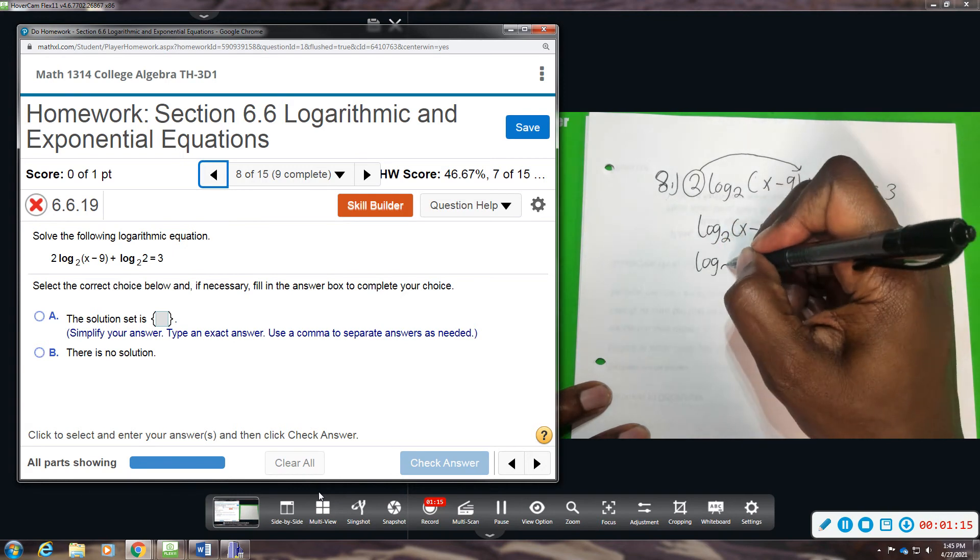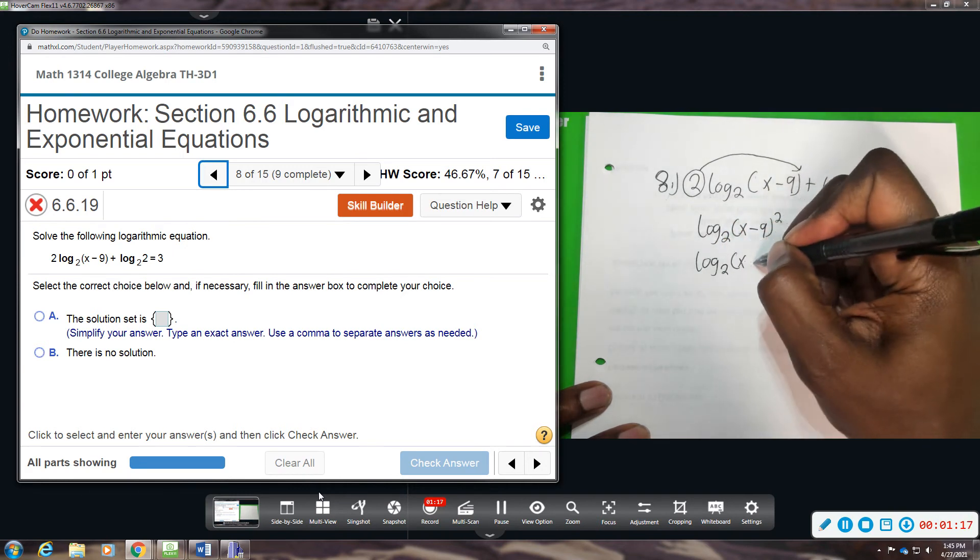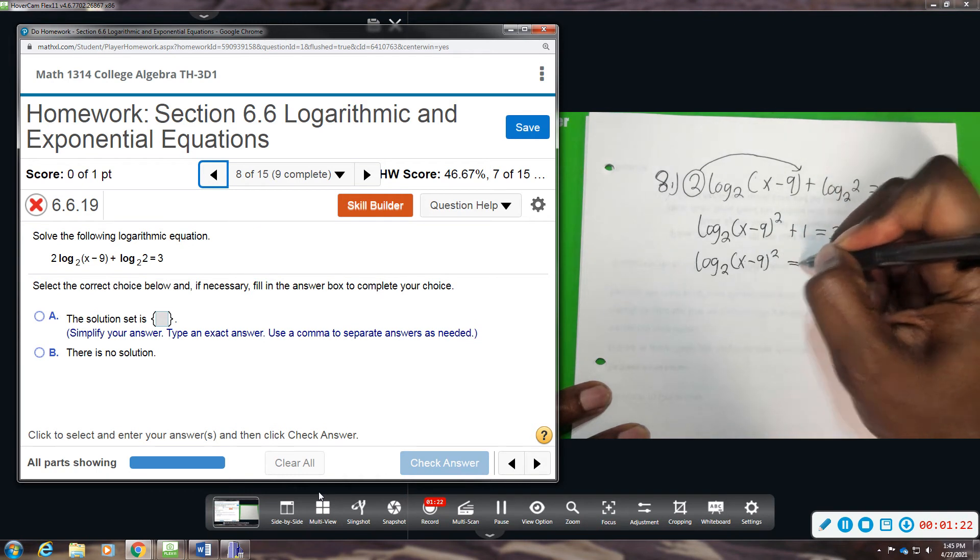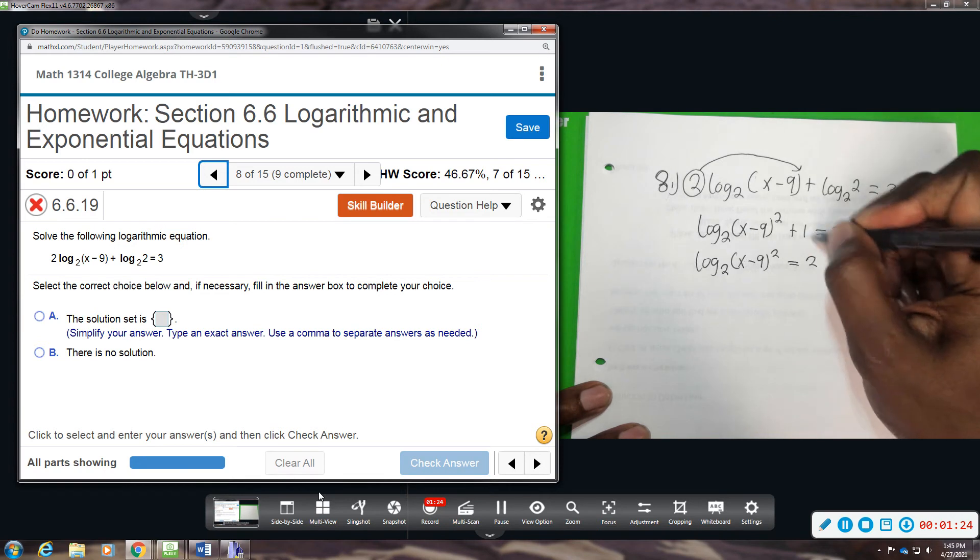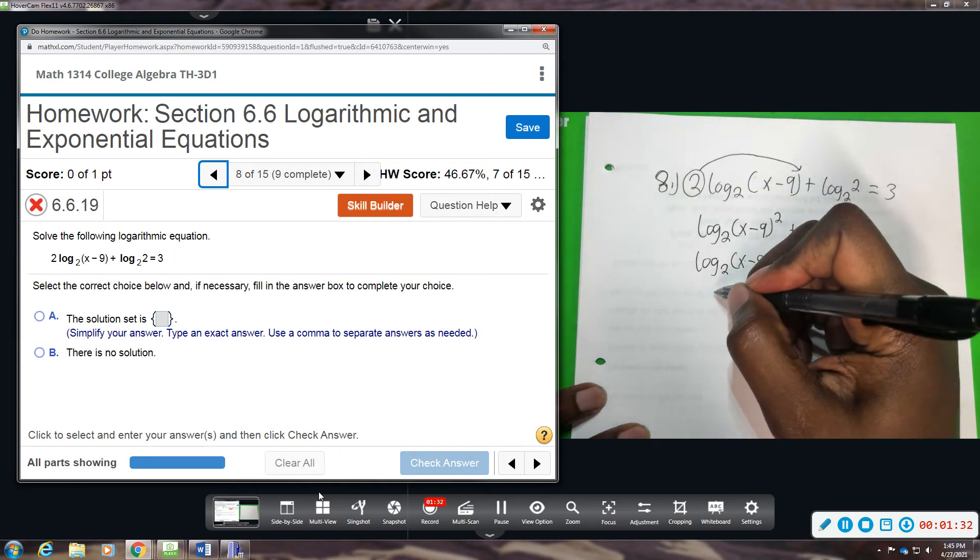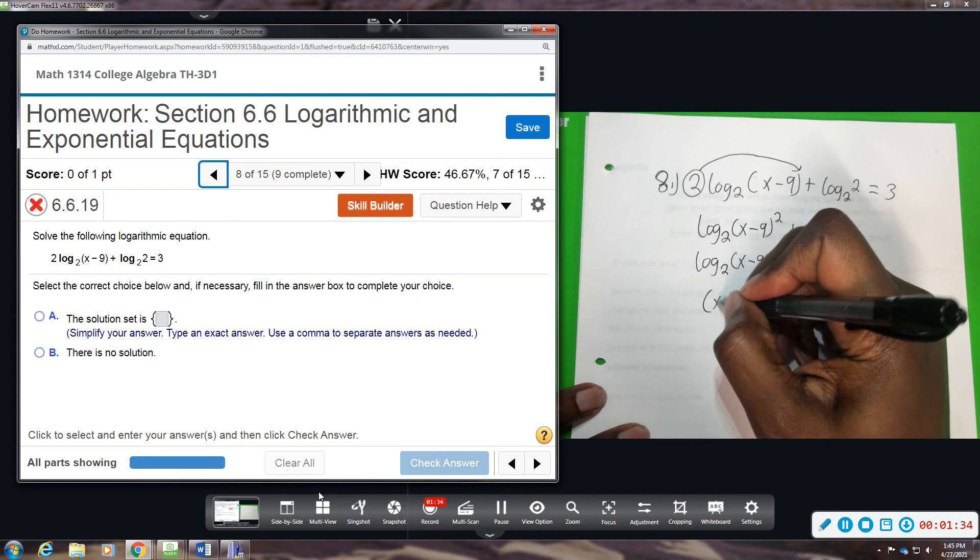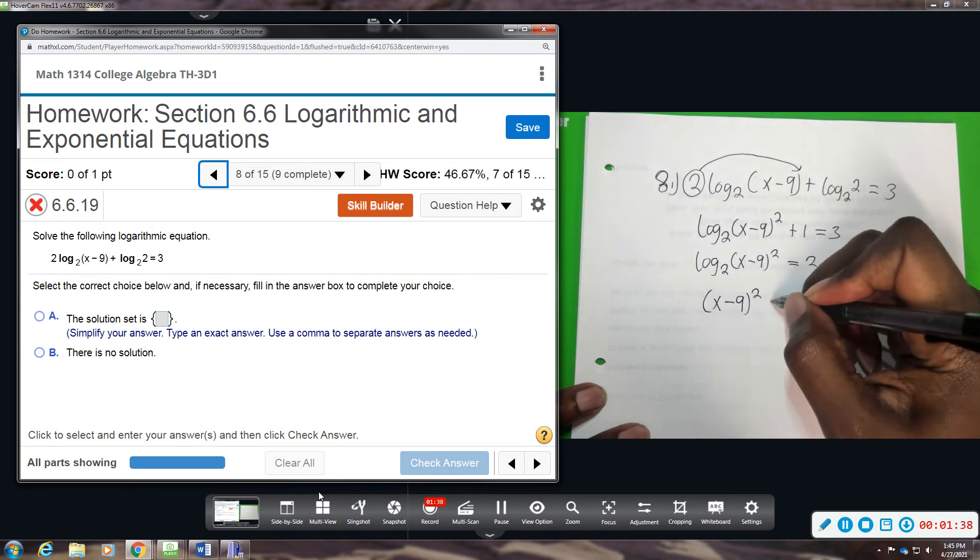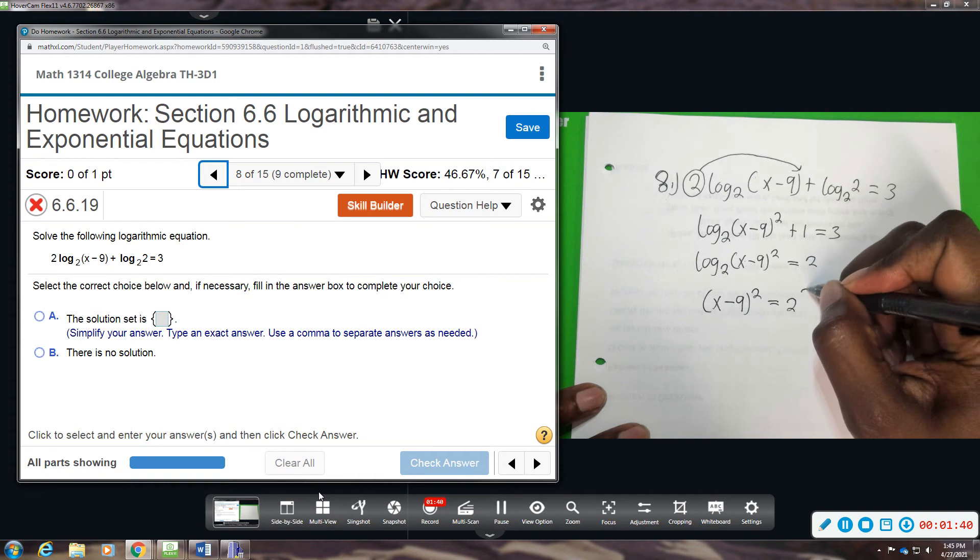So we get log base 2 of x minus 9 squared equals 2. All right, now we're going to write this in exponential form. So this base of 2 is going to come over and become 2 to the second power. That's going to leave us with x minus 9 squared equals 2 squared.